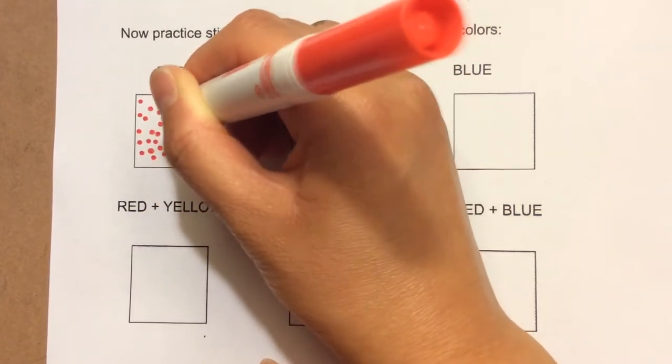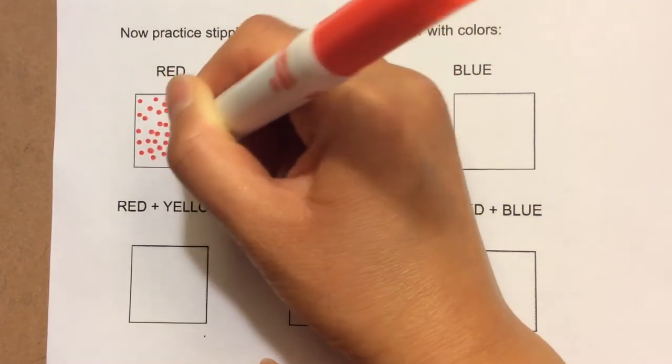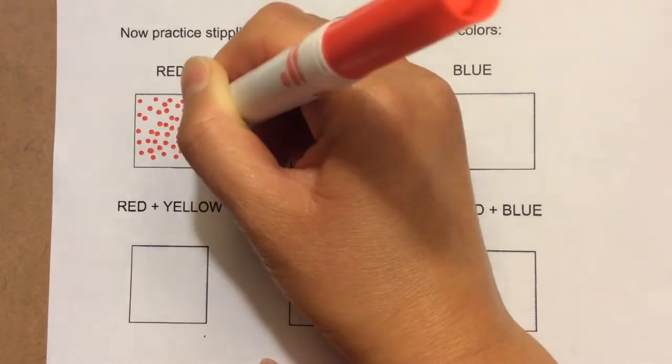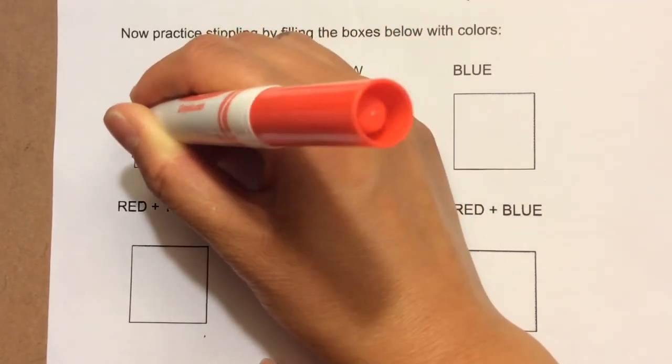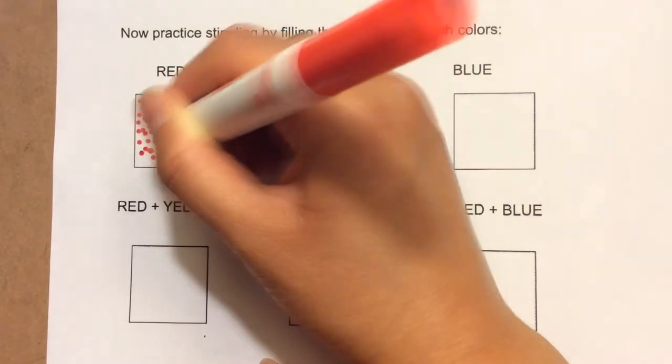Again, I'm trying to evenly space my dots as much as possible. And if I want it to look darker, I can always go in between the dots as best as I can.